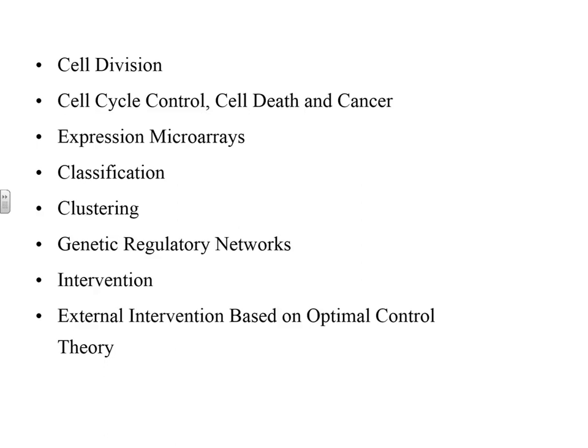Then we'll do clustering, where you group similar items together. Then we'll talk about regulatory networks, since genes typically interact with each other in a multivariate fashion and you want to capture that multivariate activity. Once you've done the modeling, you want to intervene — I'm a controls person, so in most situations you want to control something. For example, you want to control the behavior of a cancerous cell so you can hopefully induce it to die or slow its growth. I'll talk about external intervention based on optimal control theory.